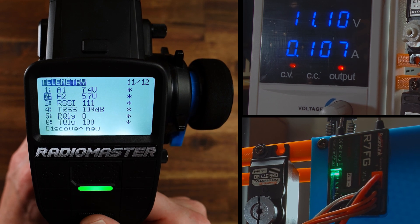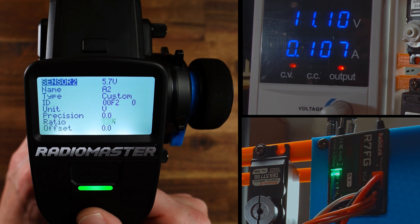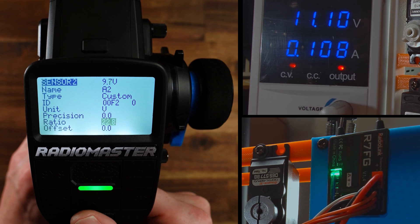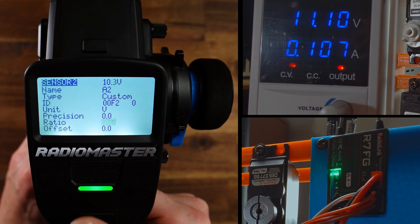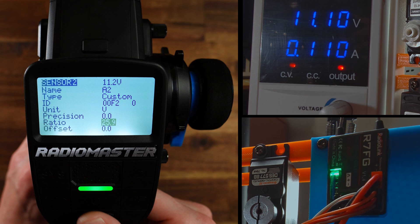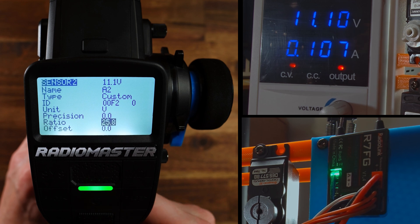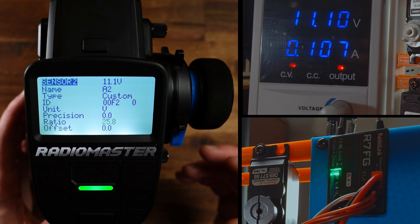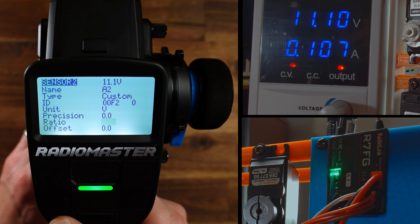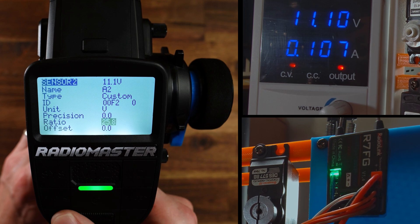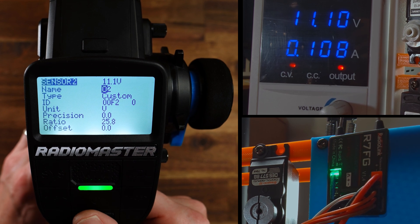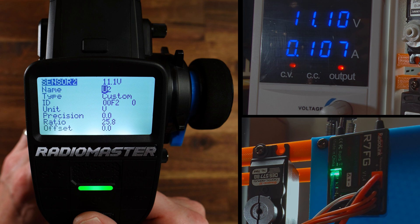And for the A2 I do the same. I increase the ratio until I have 11.1 volts. Of course here in this test setup it is a bit easier because I know what voltage the PSU delivers. So I can set that value very easily. In a real setup you have to measure the actual voltage output of your battery and then you can calibrate this sensor.